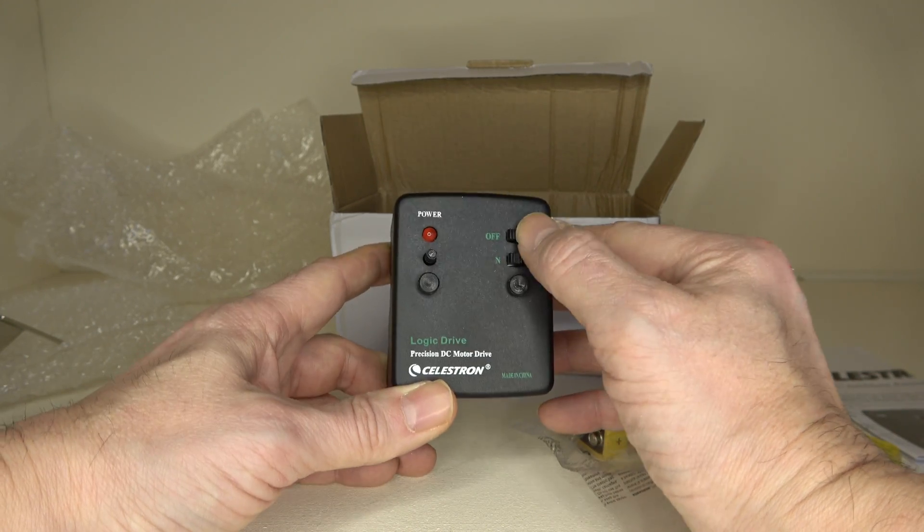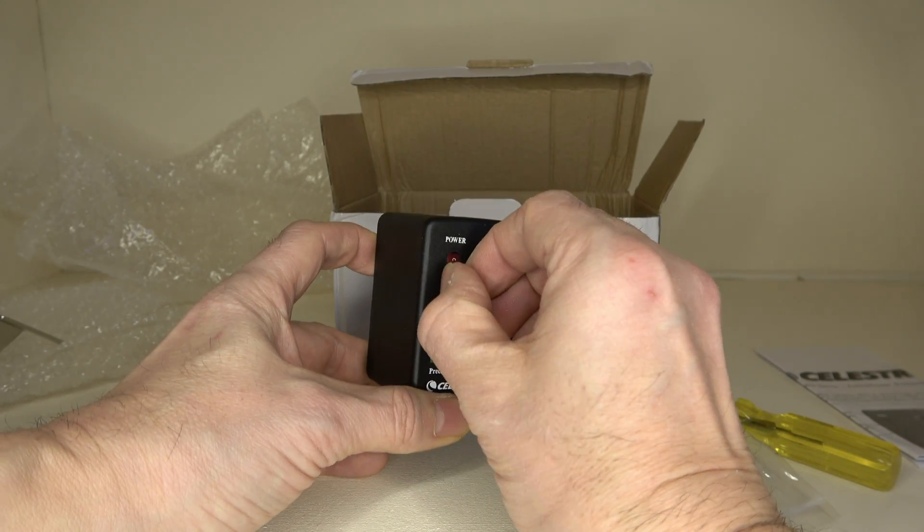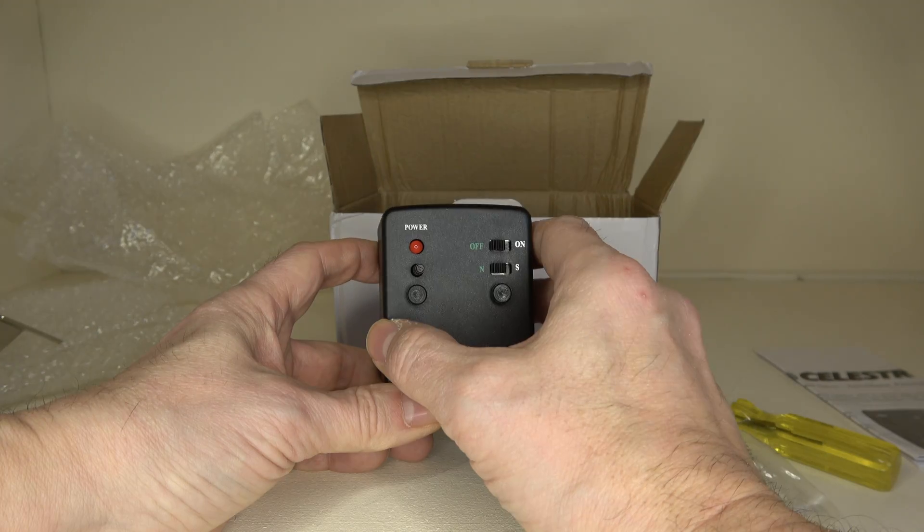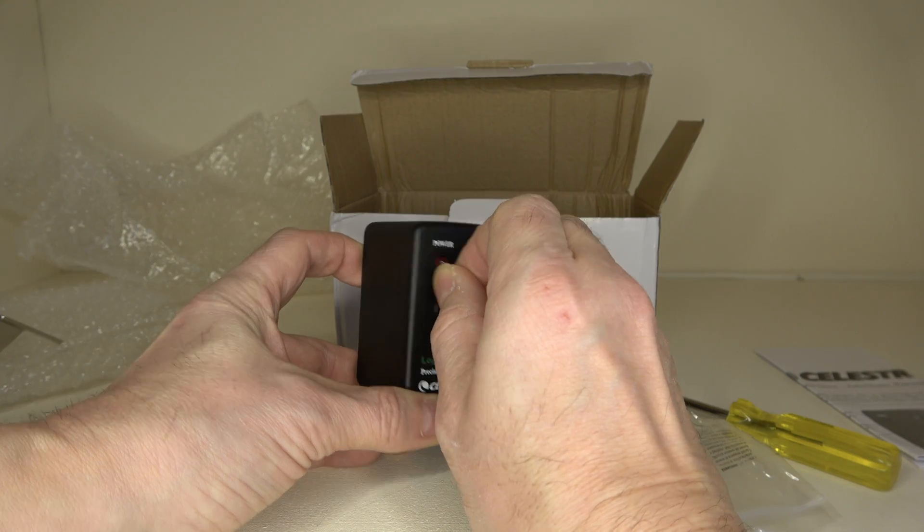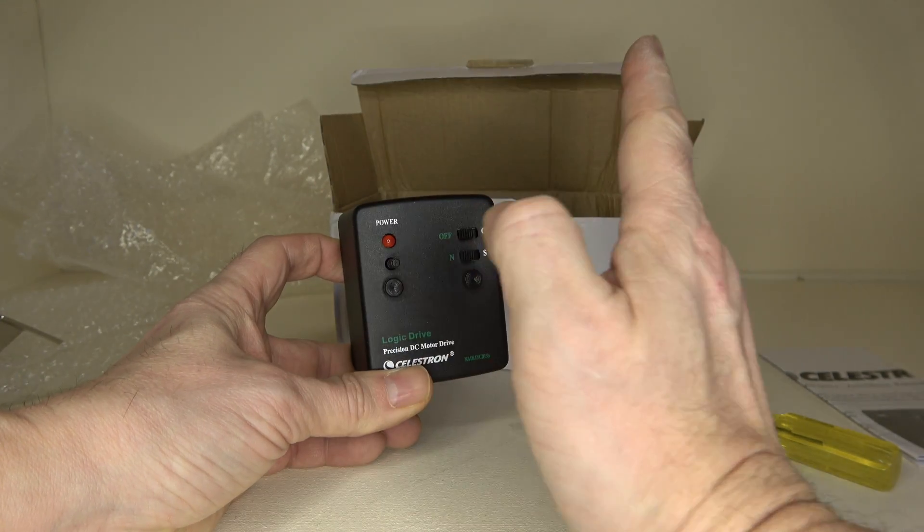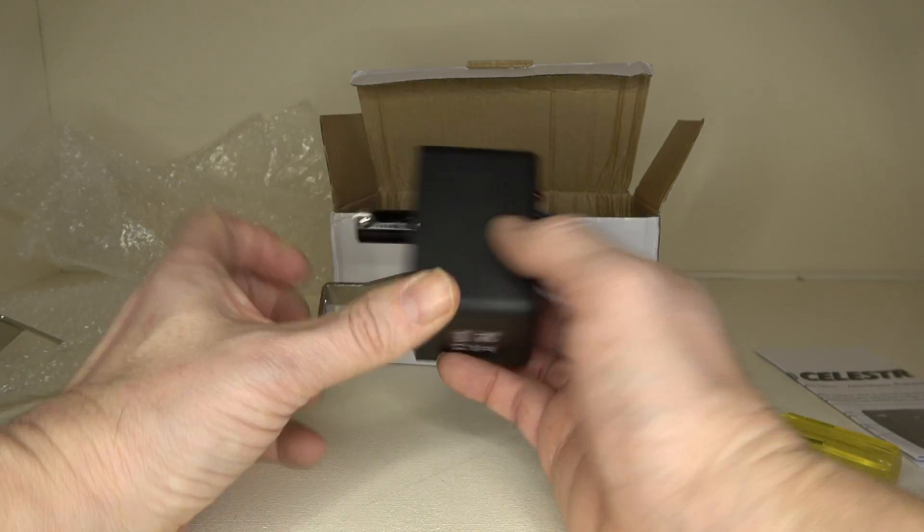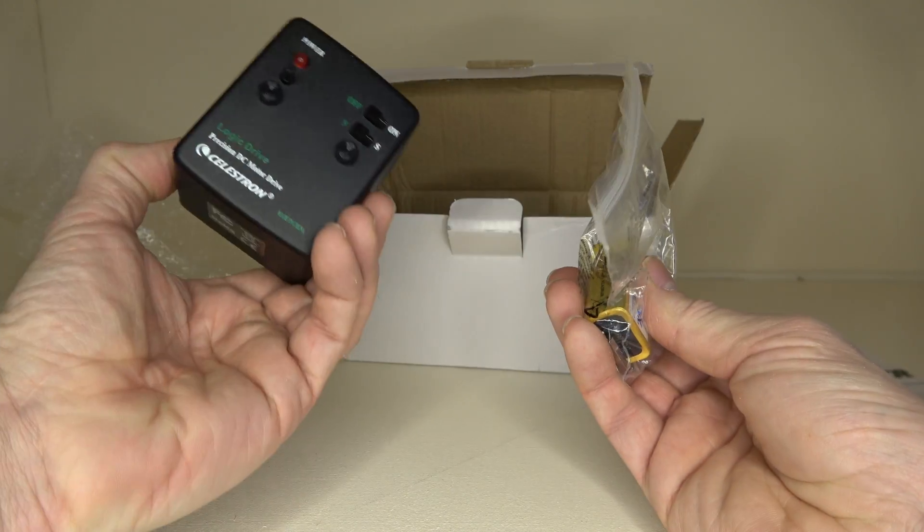And we have two screws here. This is the variable speed control, and this is the power light. It has the variable speed control because you might find you want to speed up or slow down the tracking for the object depending how far it is that you're viewing at the time. So how do we get the battery inside the motor?